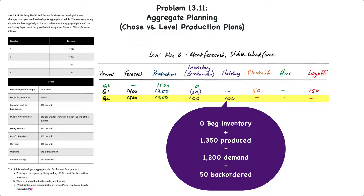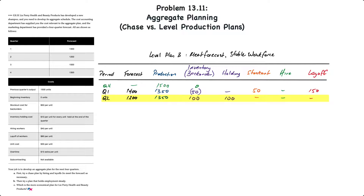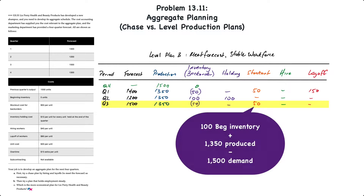In quarter two, the forecast is 1200 units and production is 1350, meaning production exceeded demand by 150 units. But the 50 units stocked out the previous period as back orders must be filled first. Therefore at the end of quarter two, 100 units are held in inventory. There are no stock-out costs and no additional hiring or layoff costs because production remains constant at 1350 units per quarter.